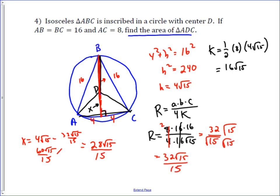That is the length of X, we want to find the area of ADC, and so our area is going to equal 1 half times the base, which is 8, times 28 root 15 over 15, which turns out to be 112 root 15 over 15. And that is the correct answer for the area of triangle ADC, given that D is the center of the circumscribed circle of ABC.